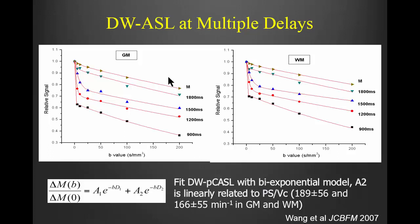Plotting the signal curves in gray matter and white matter at multiple post-labeling delays clearly reveals two compartments—one fast and one slow. The slow compartment represents tissue and the fast one represents the vascular and capillary compartment. With prolonged post-labeling delay, the fast component's fraction decreases, providing evidence of the water exchange process. From bi-exponential fitting, we estimate KW values of 189 and 166 per minute in gray matter and white matter, respectively.